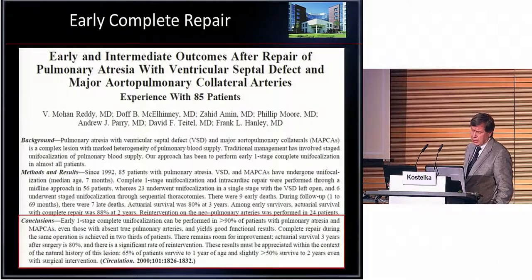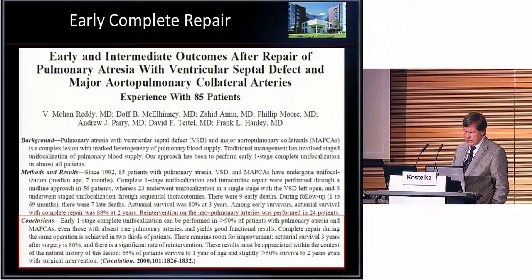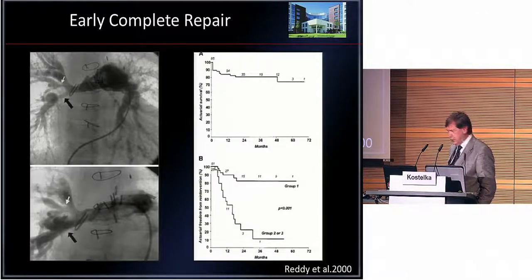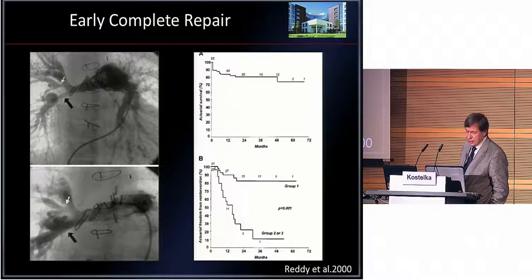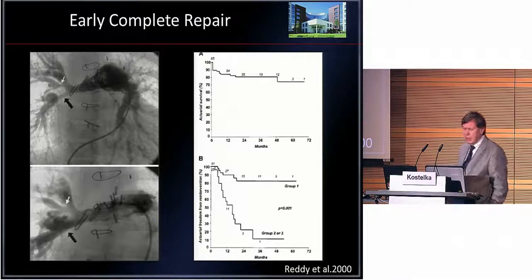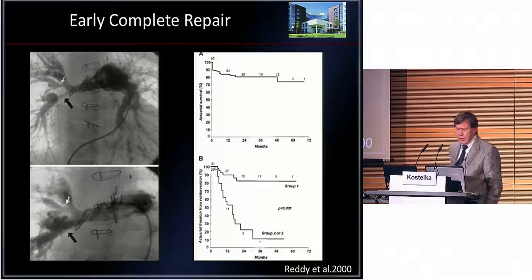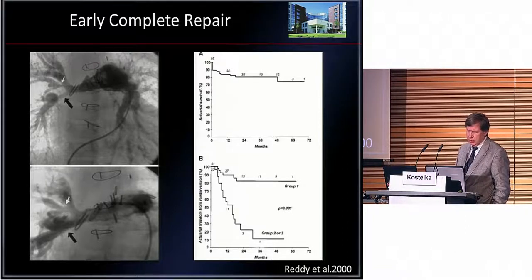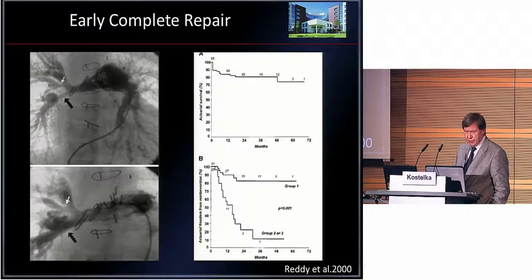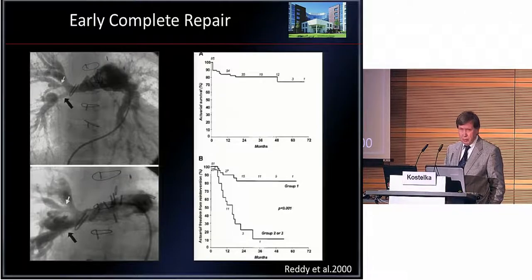The actual survival at three years was 80%. And as you can see from the same picture — we are taking the same sources for our presentation — there is a very low re-intervention rate in patients with complete VSD closure, and a very high rate of re-intervention in patients not suitable for biventricular repair, because they have a very bad pulmonary bed.